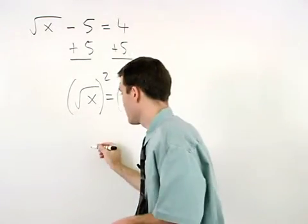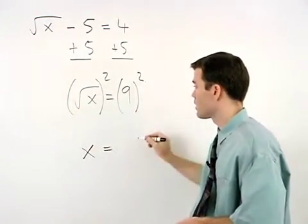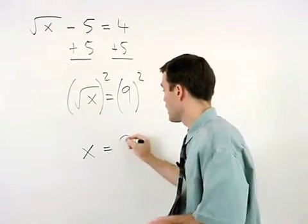And we have x equals 9 squared, which is 9 times 9, or 81.